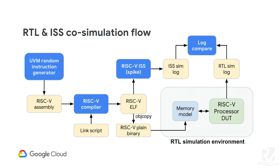The co-simulation flow is a very standard flow. On the left side you have the random instruction generator whose output is a complete RISC-V assembly program. You pass it to the compiler to generate a binary. The binary is then passed to both RTL simulation and ISS simulation. Both simulations generate trace logs, which we compare at the end of simulation. If you already have a test bench doing co-simulation, you can use only the random instruction generator part to generate programs, and the rest of your flow remains unchanged with very little integration effort.